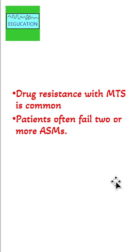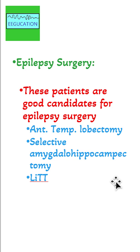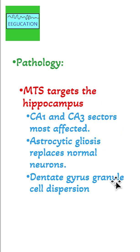Drug resistance is very common with mesial temporal sclerosis, and patients often fail two or more anti-seizure medications. Epilepsy surgery is a good option for these patients, and procedures such as anterior temporal lobectomy, selective amygdala hippocampectomy, and laser interstitial thermal therapy can be considered.